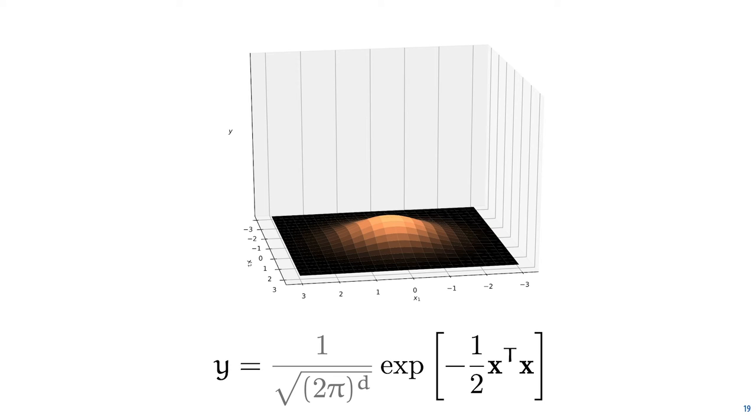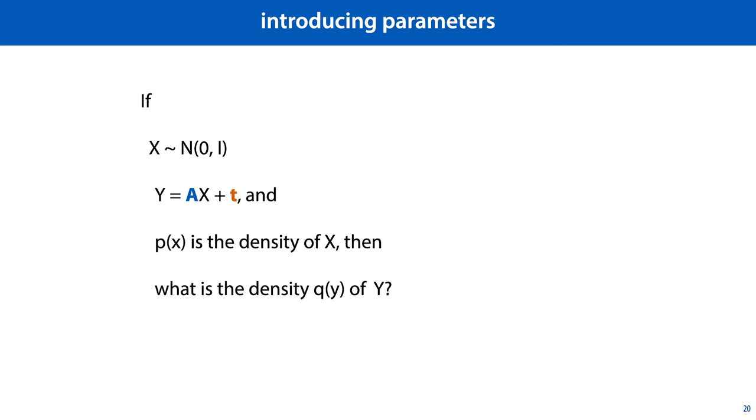To turn this into a parametrized family of multivariate normal distributions, we'll use a special trick. We'll start with this one and apply a linear transformation. We'll see that the parameters of the linear transformation then become the parameters of the resulting multivariate normal. Here's the formal way of doing that. Imagine that we sample a point x from the standard normal distribution. We then transform that point by a linear transformation defined by a matrix A and a vector t, resulting in a vector y.